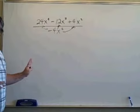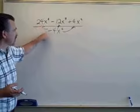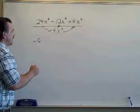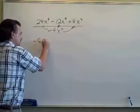Let's see if we can do that in our head without having to rewrite the whole problem. So it's 24 divided by negative 4. That's going to give us negative 6. And x to the 4th divided by x to the 2nd is x to the 2nd.